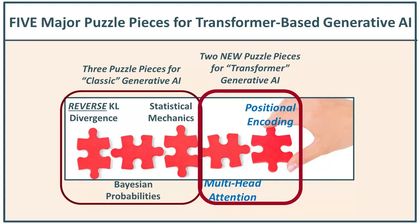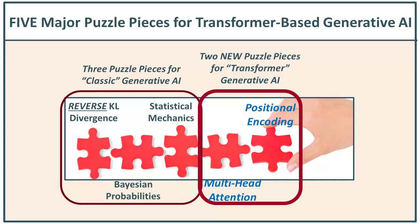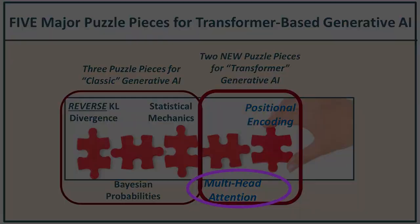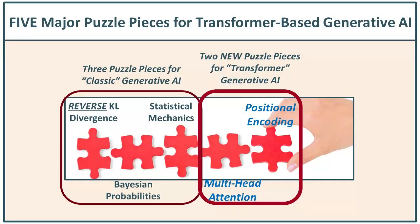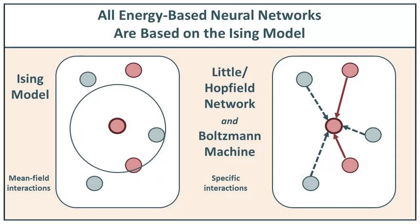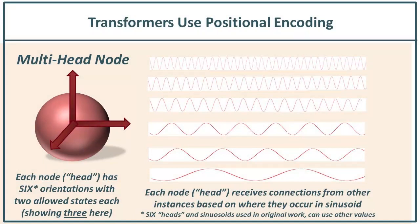Multi-head attention is really taking that notion of statistical mechanics where you have spins or orientations or states of a system that are up or down or on or off. In a Boltzmann machine, Hinton and Salakhutdinov describe it as a bi-state system — on or off nodes. In transformers, multi-head attention uses vector spins, meaning there are six different directions in which a unit can be on or off. For positional encoding, we use a sinusoidal method that lets us take into account the natural congruence of follow-ons between a word — or piece of code, or element in an image — versus something near or far, depending on the sinusoidal length used.